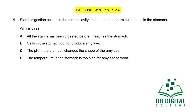In this question, starch digestion occurs in the mouth cavity and duodenum but stops in the stomach. Why? In the duodenum and mouth cavity, the pH is suitable for amylase activity. In the stomach, conditions are very acidic. Option A says all starch was digested before reaching the stomach — we don't know this. Option B says stomach cells don't produce amylase — this information isn't given, though it might be true. Option C says the pH in the stomach changes the shape of amylase — yes, acidic pH denatures the enzyme so starch cannot be digested. Option D says temperature is too high — no, body temperature is the same throughout. The answer is C.